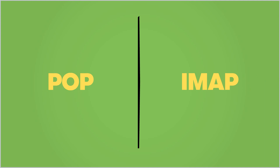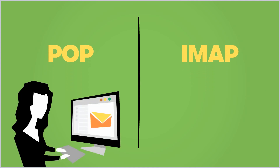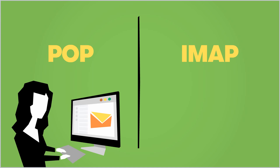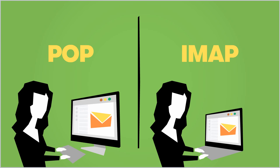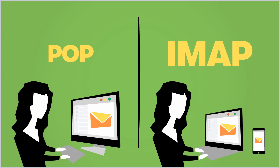To decide which will work best for you, think about how you like to check your email. If you're someone who always checks their email from one location or on only one device, POP will work. However, if you're someone who checks your email from your laptop just as frequently as your mobile and you need to be able to access it no matter where you are, then IMAP is a better choice.